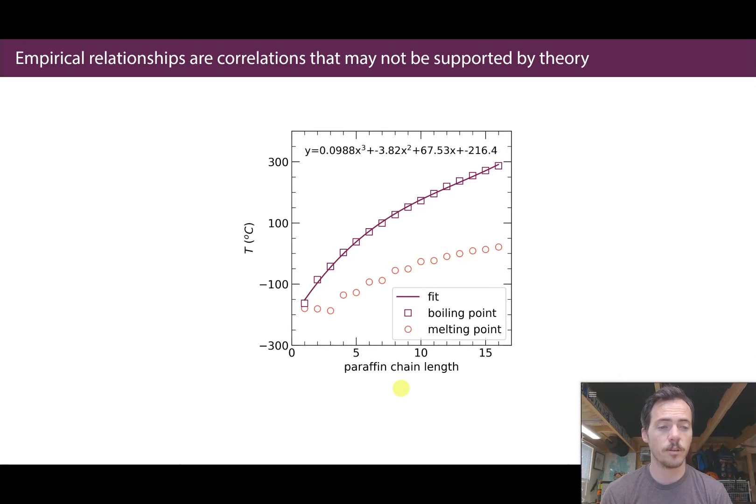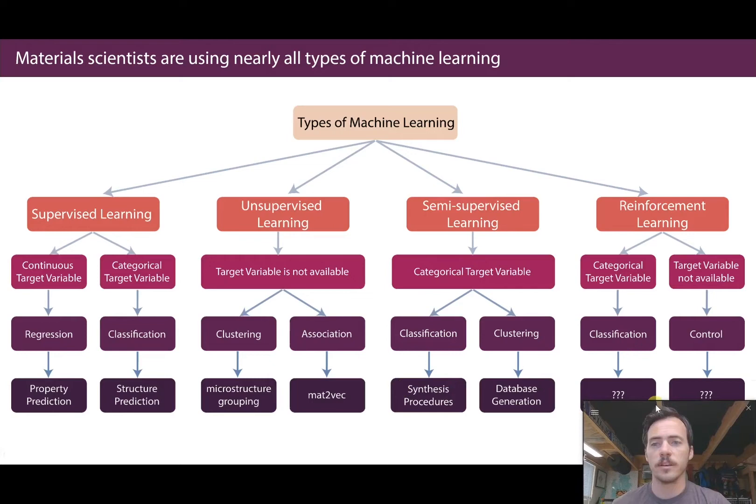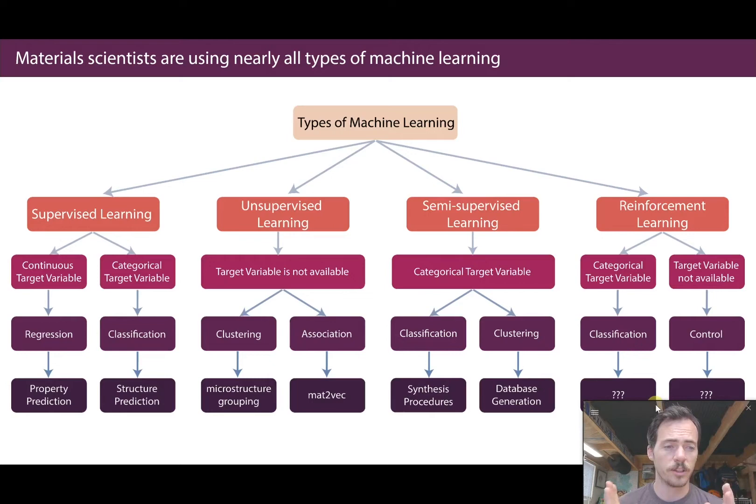When you dive into the actual types of machine learning, the most common view divides it into four categories: supervised machine learning, unsupervised, semi-supervised, and reinforcement learning. Those are the typical four types of machine learning you will see talked about.